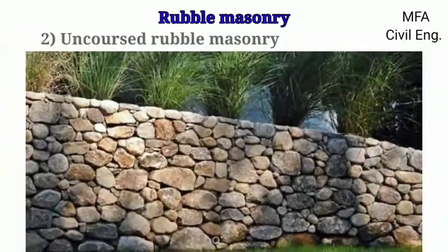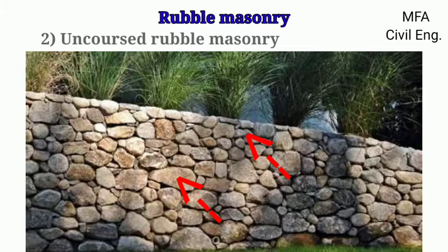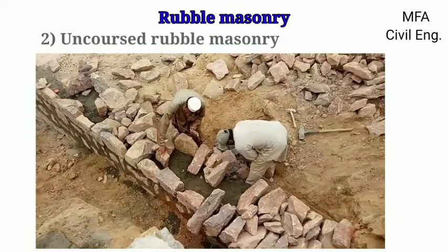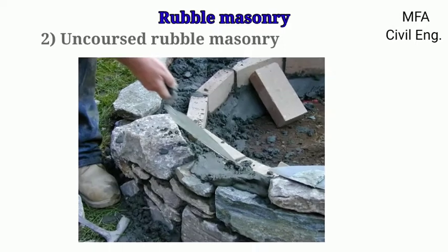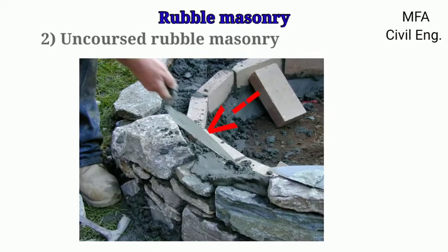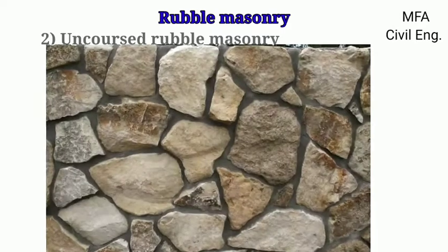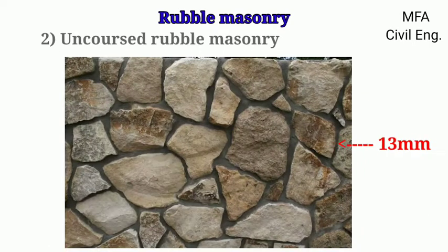In uncoursed rubble masonry, stones or rubbles are used without any dressing. The shape and size of the rubble or stone used in the masonry is not the same but varies. The mason selects stones at random from the heap and lays them in line and plumb so as to form a strong bond. Before laying the stone, all the projecting corners are slightly knocked off with a hammer. The joints are filled with mortar using a steel trowel and finished flush. The joints should not exceed 13 mm in thickness and large stones are used at the corners to increase strength.